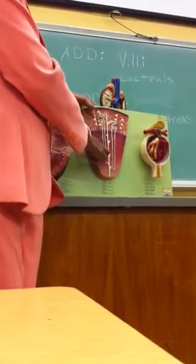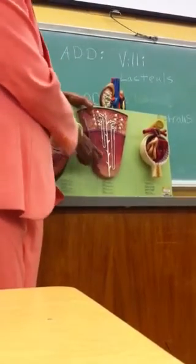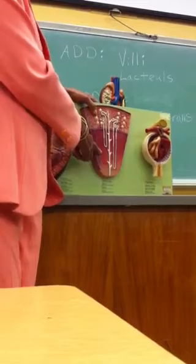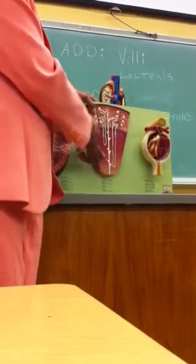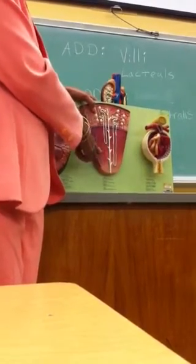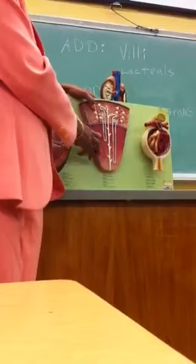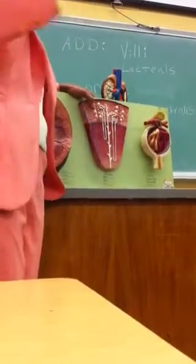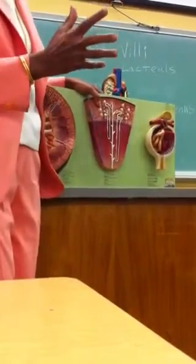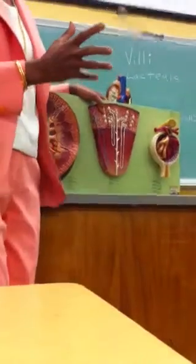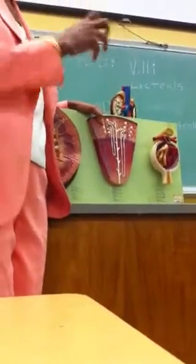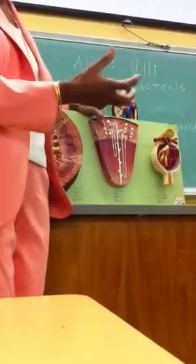Surrounding this tubule, that's what you see here. We call them peritubular capillaries. These are the peritubular capillaries — they are surrounding the tubule so that they can take back, reabsorb, all the good things into the bloodstream.